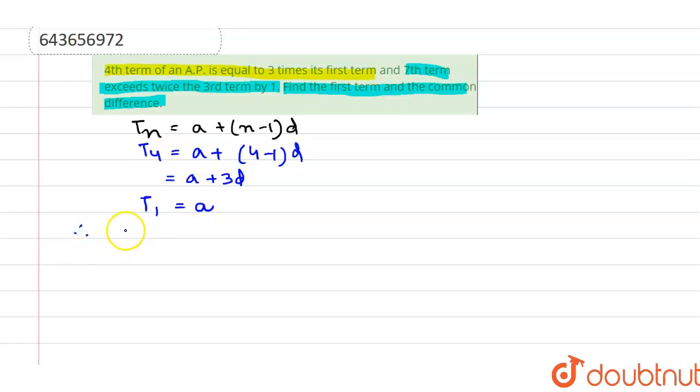Therefore, from the first statement, we have t4 is equals to 3 times the first term. So, a plus 3d is equals to 3a or 3d is equals to 2a that gives us a equals to 3d by 2, which is the first equation.